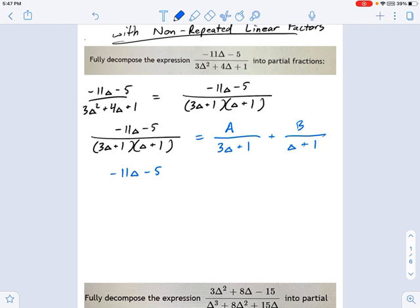When I do that to the right side, one of them disappears. The 3 delta plus 1. But I multiply by a factor of delta plus 1. So, I get A times delta plus 1. And then, on the right, when I multiply by both factors, delta plus 1 disappears. But I get an extra factor of 3 delta plus 1. So, this becomes B times 3 delta plus 1. You should be comfortable with factoring and solving equations at this point if you're doing partial fraction decomposition.